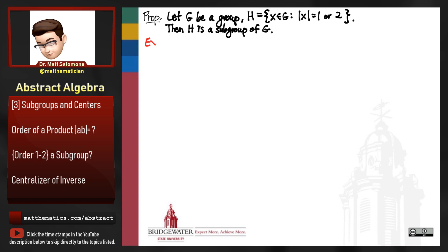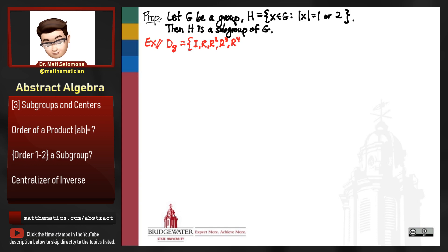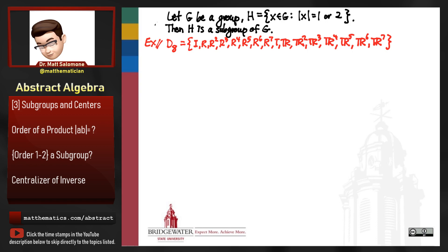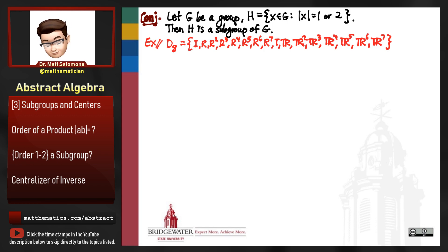As an example, let's go back to the dihedral group of the octagon, D8. The elements are the identity, R through R to the seventh, T, TR, TR squared, TR cubed, TR to the fourth, TR to the fifth, TR to the sixth. But in writing down this example, I'm already doubting myself whether this is a true statement. Let's call it a conjecture rather than a proposition.